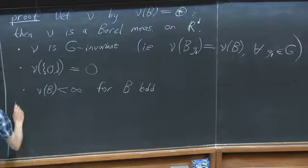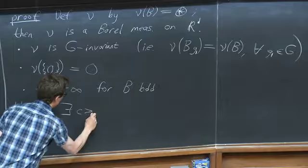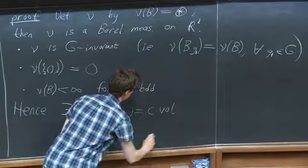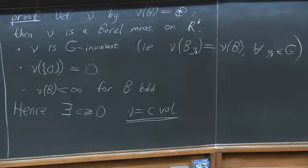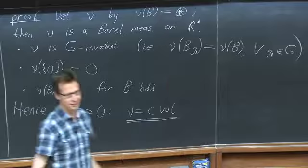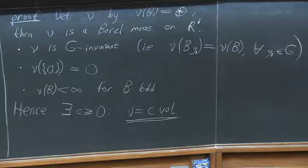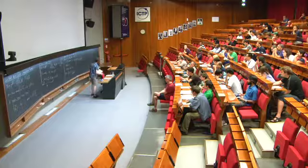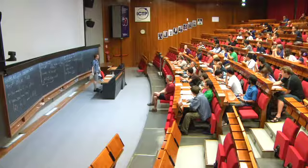If we have all of these properties, it follows that ν must be Lebesgue measure times a positive constant C—possibly zero—such that ν equals C times the d-dimensional Lebesgue volume measure. To nail down this constant, one would like to choose B in a nice way. One approach: let B become a larger and larger ball and see what happens.